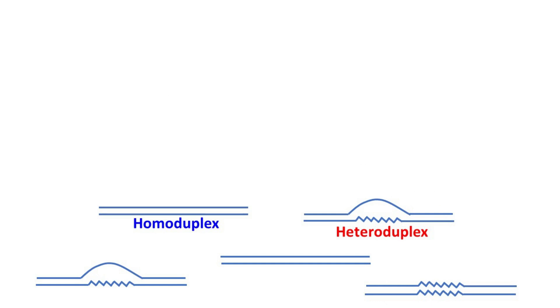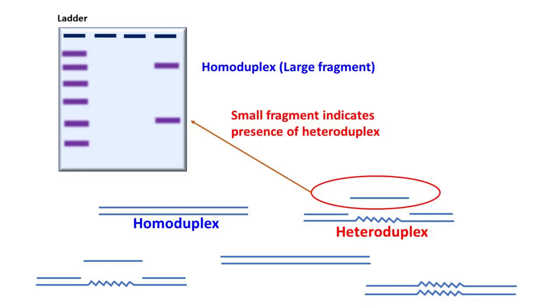This mismatched region of the heteroduplex is cleaved using single-strand specific nuclease. The small fragment released after digestion is detected by gel electrophoresis.